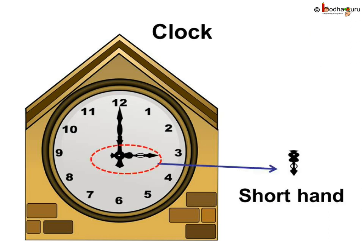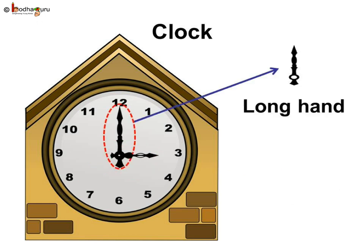Let us see the two hands of the clock. Unlike we human beings, the clock's two hands are of different sizes. One is a long hand and one is short. The shorter one is called the hour hand, and the longer one is called the minute hand.